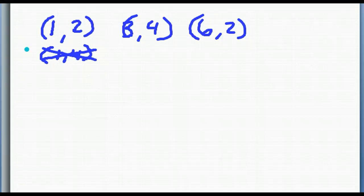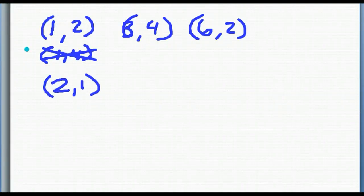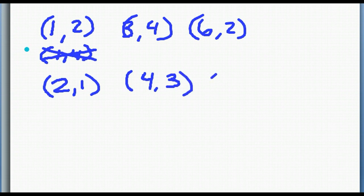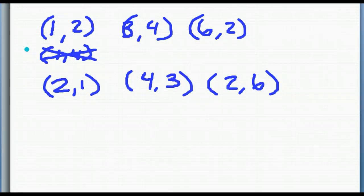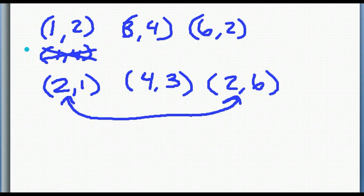What we're going to look at is reversing the coordinates. What happens if we reverse the coordinates of all the ordered pairs? If we have (2,1), (4,3), and (2,6), we still have a relation because a relation is a set of ordered pairs. In this case, we do not have a function because we have 2 going to 1 and 2 going to 6. So when you have an inverse of a relation, sometimes it's a function and sometimes it's not.